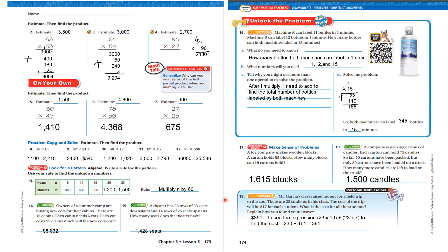Look at 19. Mr. Garcia's class raised money for a field trip to the zoo. There are 23 students in the class. The cost of the trip will be $17 for each student. What is the cost for all students? Explain. Well, the cost is $391. I used the expression 23 times 10 plus 23 times 7 to find the cost. 230 plus 161 is 391.